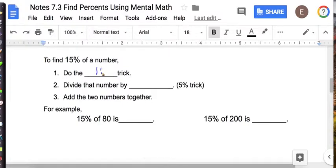We're going to use the 10% trick. And then we're going to divide that number by 2, which is the 5% trick. And then we're going to add the two numbers together because we want 15%. So here's how it works.